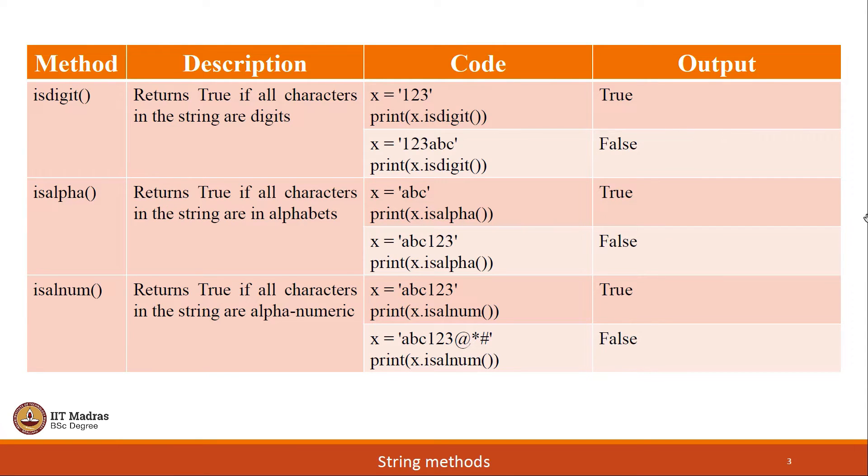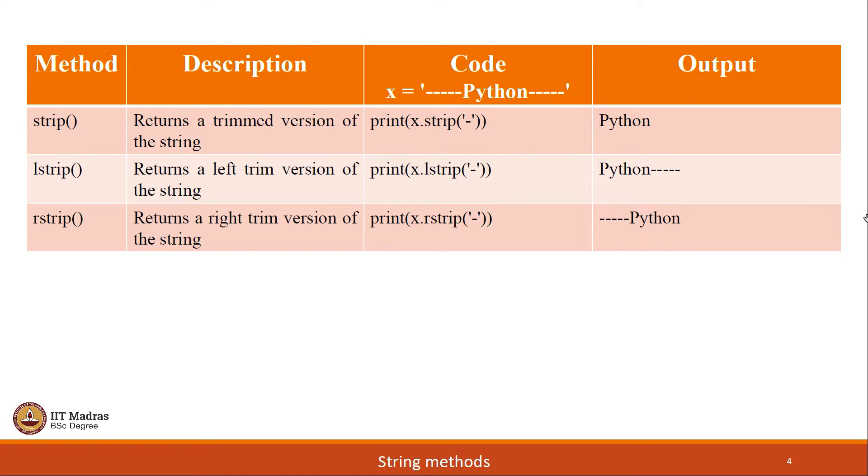The next set of string methods are strip, lstrip and rstrip. As the description says, strip method returns a trimmed version of the string. As per the given example, it removes all those hyphens or those dash symbols which are there on the leftmost side of the string as well as the rightmost side of the string. This particular method helps us to remove those extra spaces or extra characters which appear on either side of the actual string.